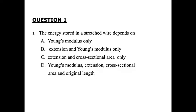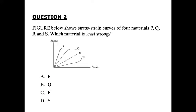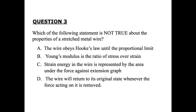Let's move on to the questions. The first one: the energy stored in a stretched wire depends on... The answer is D. Next. Figure below shows stress-strain curves for four materials P, Q, R, and S. Which material is least strong? That means it has the least Young's modulus. Obviously, it was D. Which of the following statement is not true about the properties of a stretched metal wire? The answer is D again.